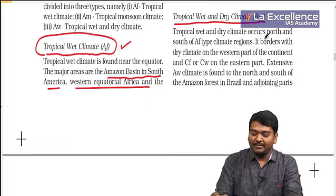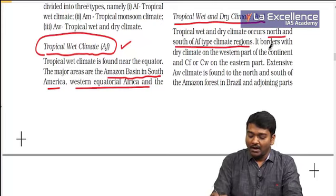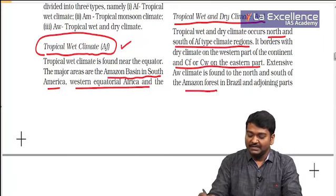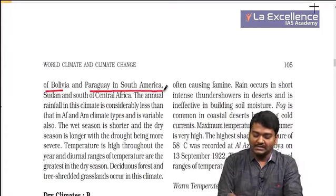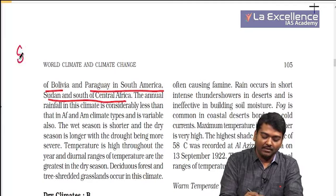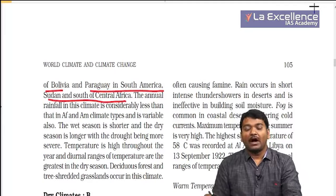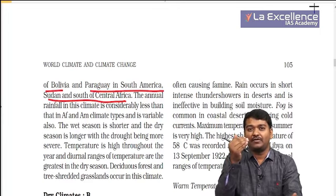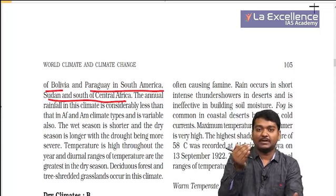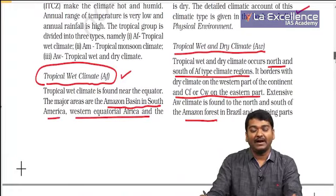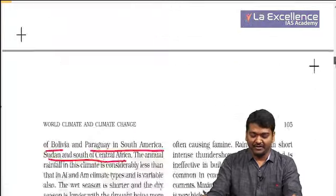Tropical wet and dry climates occur north and south of the AF type climate and border Mediterranean type climate. Locations include the Amazon basin, Bolivia, Paraguay in South America, and Sudan. As you move away from equatorial forests, rainfall decreases — sometimes more, sometimes less — which is what characterizes tropical wet and dry climates.